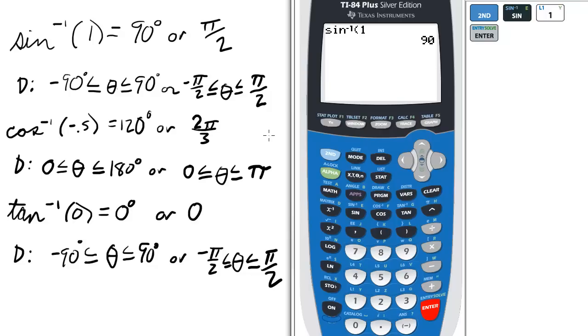Let's do arc cosine or inverse cosine of negative 0.5. First we press the 2nd key, then cosine for the inverse cosine, then negative 0.5 and enter. The answer is 120 degrees or 2 pi over 3 radians.